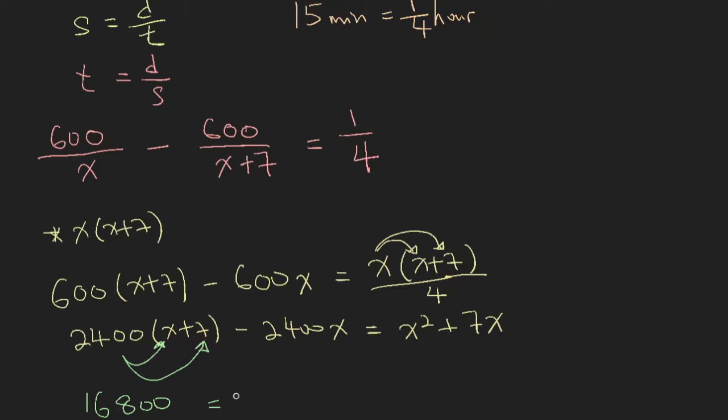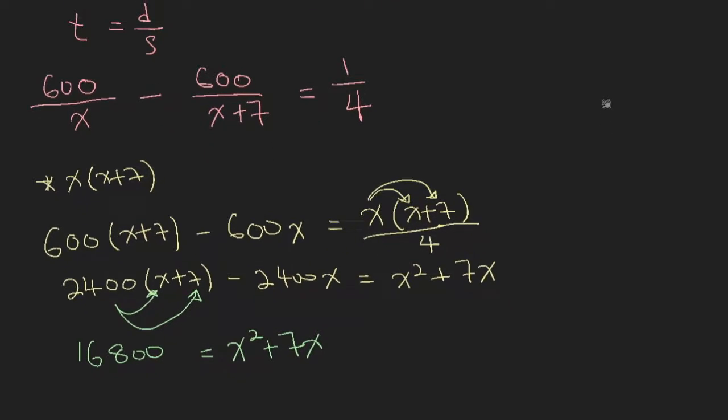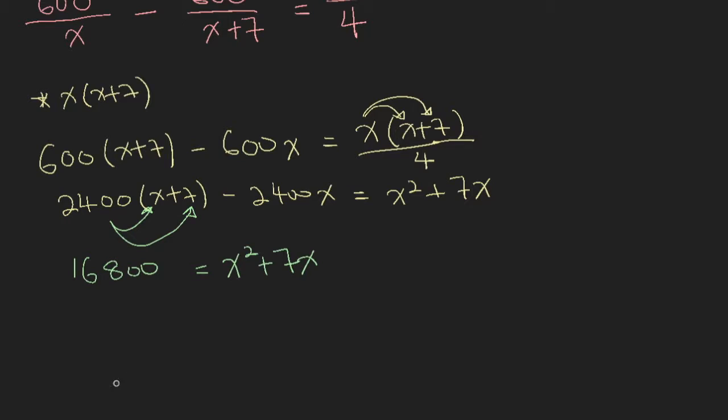So that is everything on the left-hand side. On the right-hand side, nothing is changed. So if you bring everything to one side, you will have x squared plus 7x minus 16800, which is what you have been asked to prove.